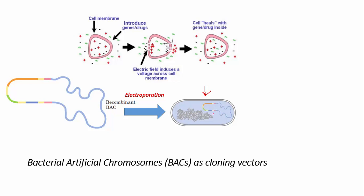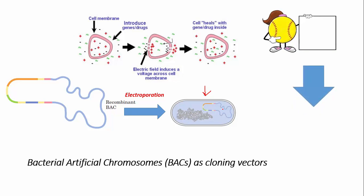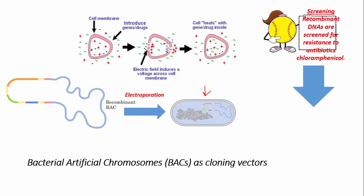However, we are not sure whether the bacterial cells have taken up the BAC vector or not. So we confirm this by performing screening. In screening, recombinant DNA is screened for resistance to the antibiotic chloramphenicol.